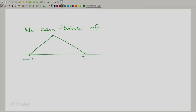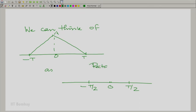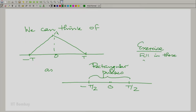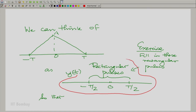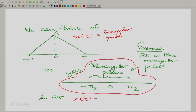You could think of this triangular pulse from minus T to plus T with a height of A — a symmetric one — as some function convolved with itself. The exercise I am giving you is: fill in those rectangular pulses such that if we call the whole thing y(t), then the triangular pulse x(t) equals y(t) convolved with y(t). This is the exercise for you to do.